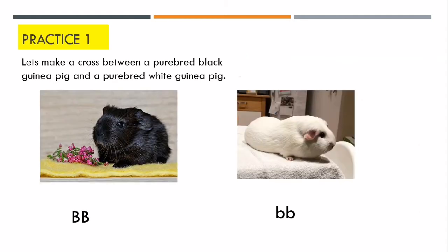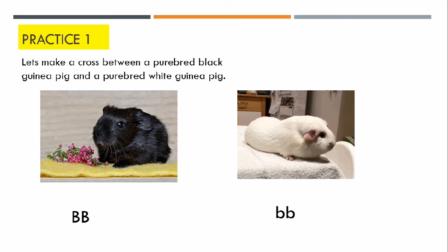Let's make a cross between a pure-breed black guinea pig and a pure-breed white guinea pig. We are only going to analyze the trait of hair color. The black hair color trait is dominant, meaning it is more likely to appear in the offspring, so we represent it with a capital letter. White hair color is a recessive trait, meaning it is less likely to appear in offspring generations, so we use a lowercase letter to represent it.